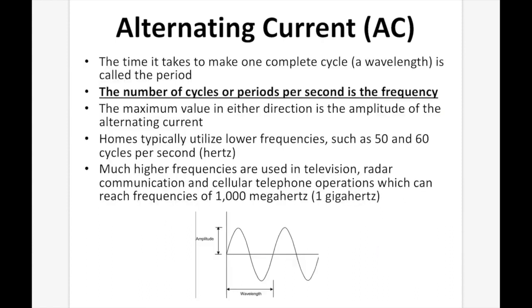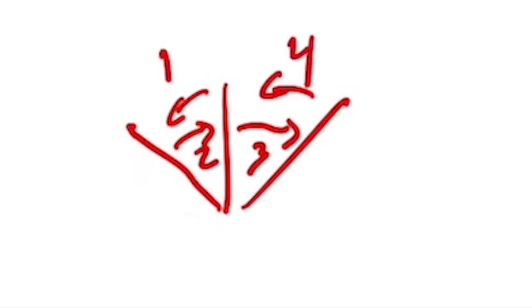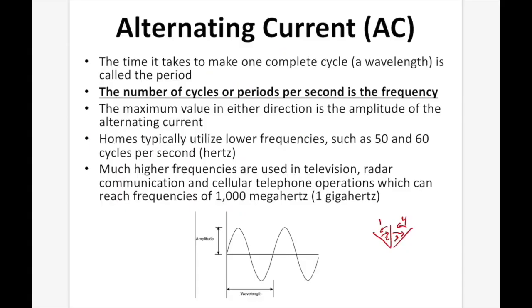The time it takes to make one complete cycle is called the period. If our electrons complete a full back-and-forth motion — left, then right, then right again, then back left — that's one complete cycle. The number of cycles or periods per second is called the frequency. If you do five cycles per second, then the frequency is five hertz. Homes typically utilize lower frequencies such as 50 and 60 cycles per second, while much higher frequencies are used in things like television, radar communications, and cell phone operations, which can reach frequencies of 1,000 megahertz, or 1 gigahertz.